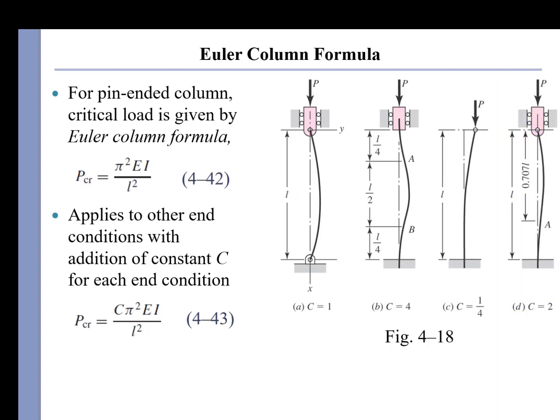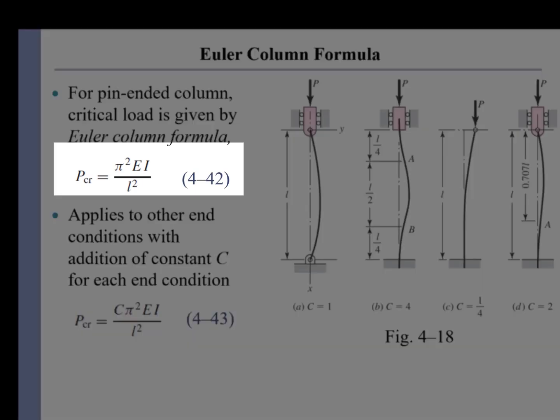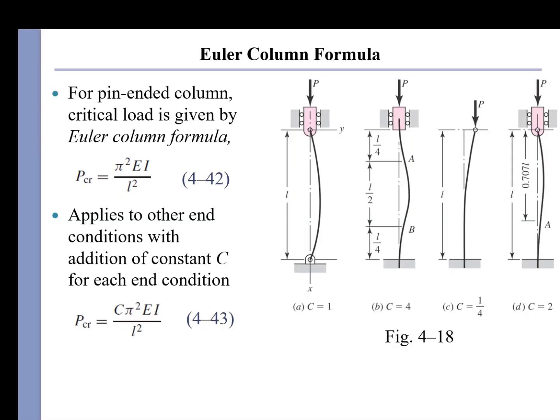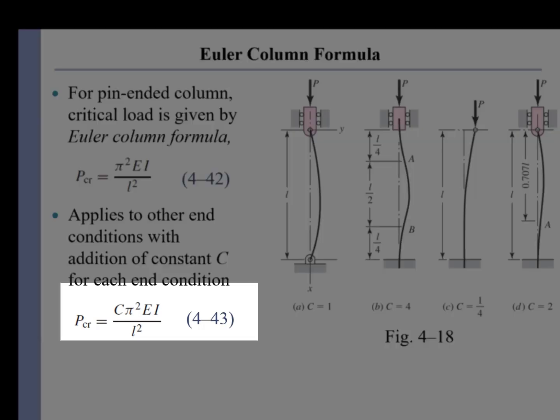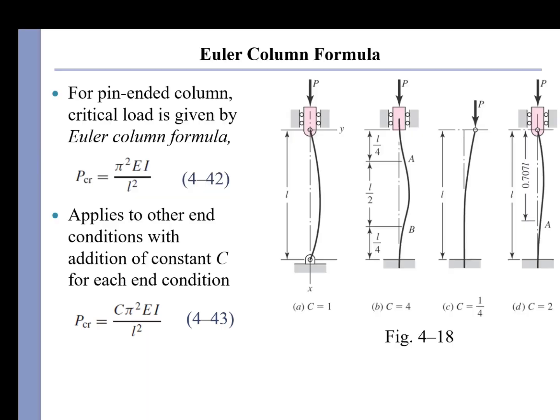The Euler buckling formula for a pinned-pinned structural column relates the critical load at which we experience buckling to the elastic modulus of the component, the moment of inertia of the component, and 1 over the square of the length of that component. We can generalize that Euler column buckling formula to equation 4-43, where the critical buckling load is related to the elastic modulus, the moment of inertia, and 1 over the square of the length, but we have a pre-factor C. If we have pinned-pinned columns, the pre-factor is 1. If they are fixed-fixed, the pre-factor is 4. If one end is fixed and one end is free, the pre-factor is 1 quarter. And for a pinned-fixed, we get a pre-factor of 2.